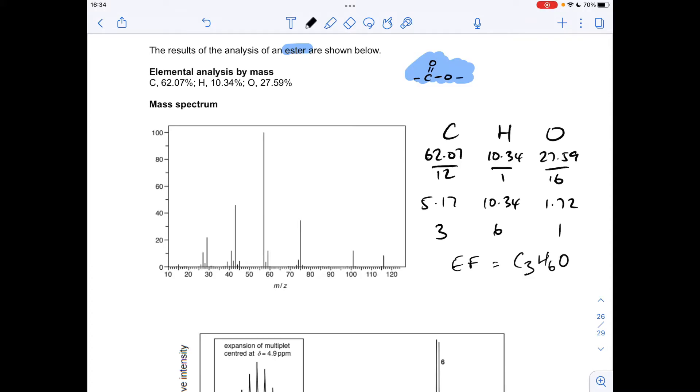So we'll work out the MR of that, so MR is 58. Then we need to go to the mass spectrum and highlight that peak there. That's the molecular ion peak, which tells us that the MR of the ester is 116. So we'll compare the mass of the empirical formula to the mass of the molecule, and you'll see that the molecule's twice as heavy. So the molecular formula must be C6H12O2.